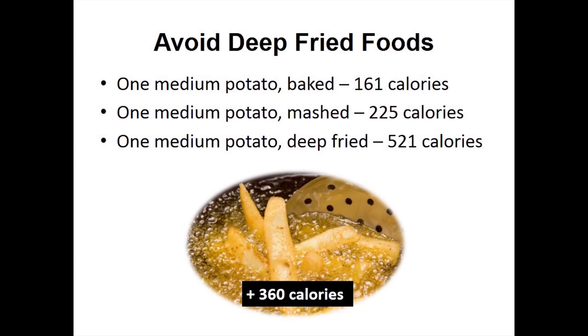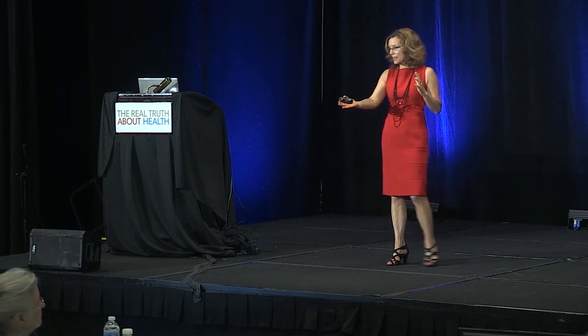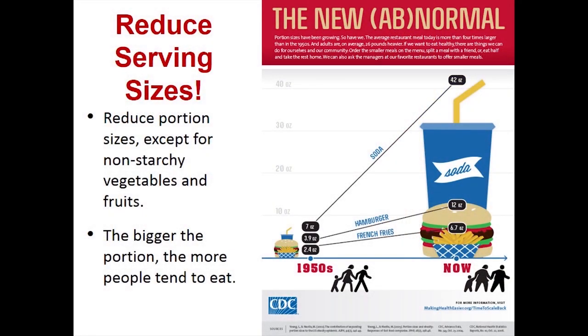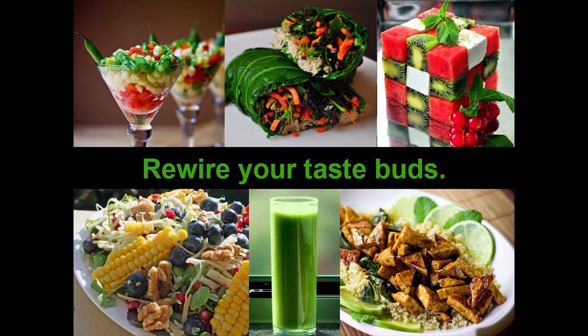Portion control is so important. According to CDC data, in the 1950s a soda was 7 ounces — now it's 42 ounces. A hamburger was 3.9 ounces — now it's 12. French fries were 2.4 ounces — now they're 6.7. As you increase serving sizes, you increase the sizes of people.